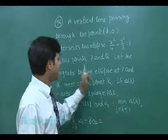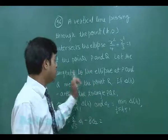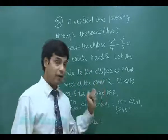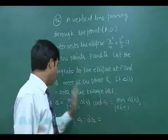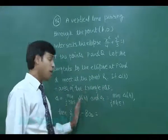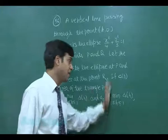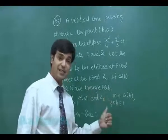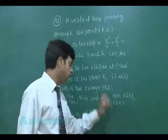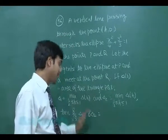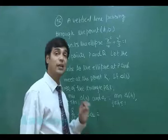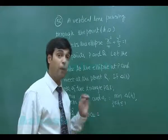Let the tangents to the ellipse at P and Q meet at the point R. If Δ(h) equals the area of the triangle PQR, Δ₁ is the maximum of Δ(h) and Δ₂ is the minimum of Δ(h) where h is lying in the interval 1/2 to 1. Then 8/√5 Δ₁ - 8Δ₂ is equal to—this is what we have to obtain.